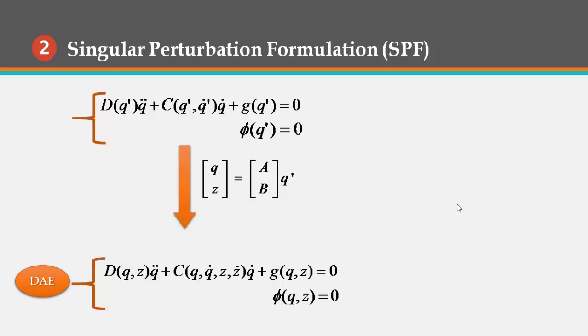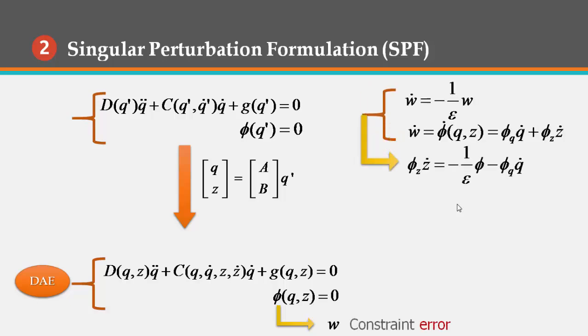As a step further, we define w to be an artificial state that represents the constraint error, which dynamics are chosen to be asymptotically approached to zero.